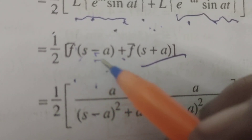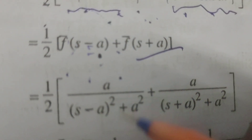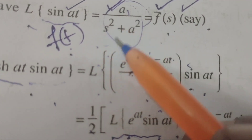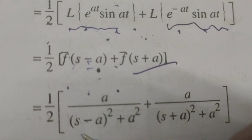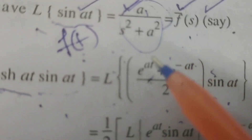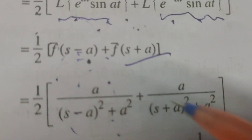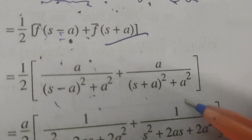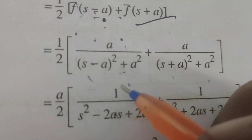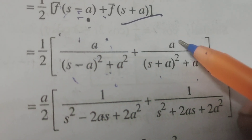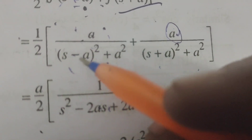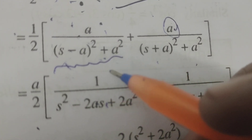So we have (1/2) into: a divided by (s-a)² + a², plus a divided by (s+a)² + a². Taking the common factor, this becomes (a/2) into the sum of those two fractions.